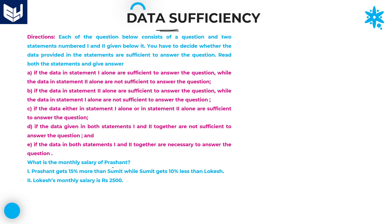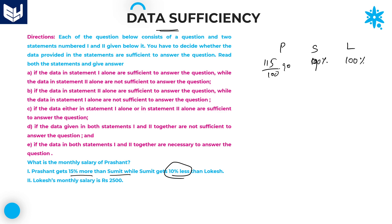What is the monthly salary of Prasanth? According to the first statement, Prasanth gets 15% more than Sumit, and Sumit gets 10% less than Lokesh. If Lokesh is 100%, Sumit gets 10% less, which is 90%. And Prasanth gets 15% more than Sumit, so Prasanth is 115% of 90. This is the value of Prasanth.